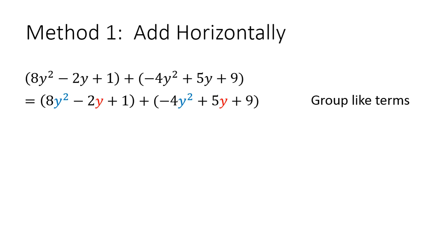We want to group the like terms together. So I didn't change any signs of anything, I just grouped them together. I brought the -4y² with the 8y², the 5y with the -2y, and put the 1 and 9 together.